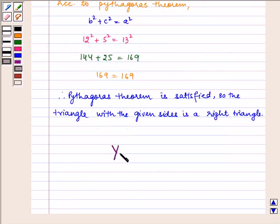Therefore, yes, it is a right triangle and the hypotenuse equals 13 cm. This is the required answer.